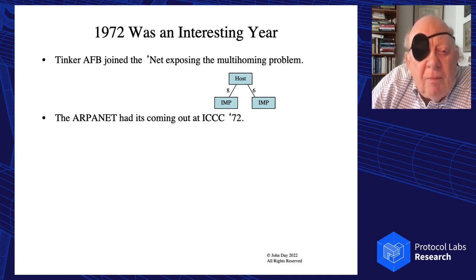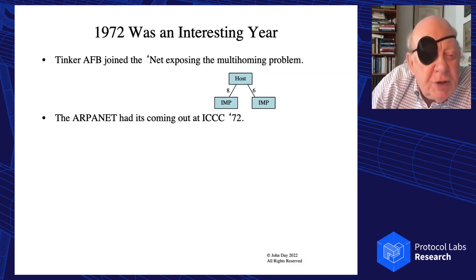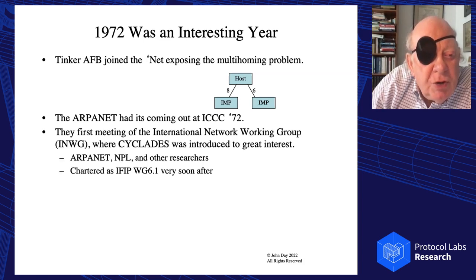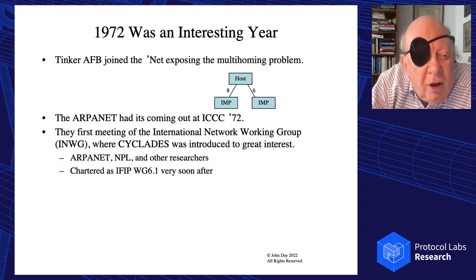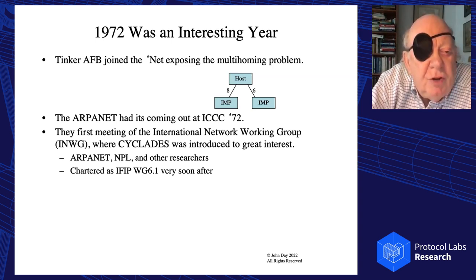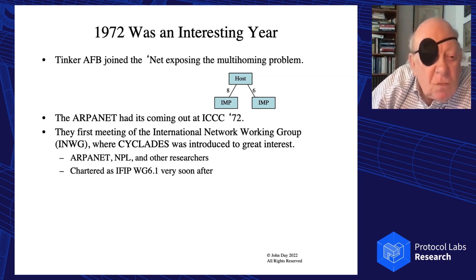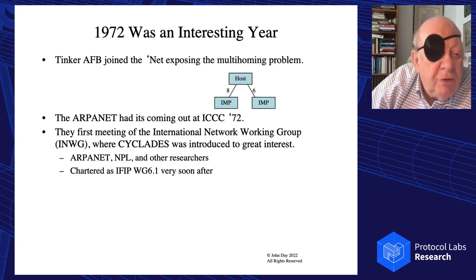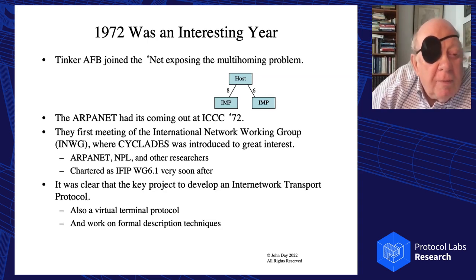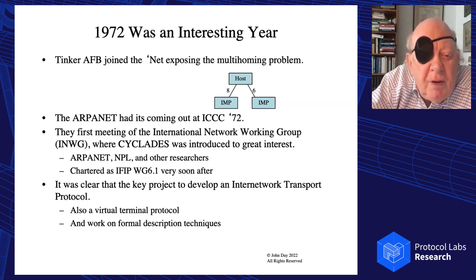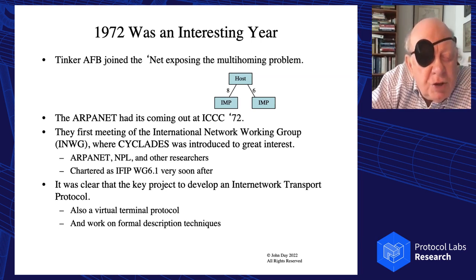The ARPANET had its coming-out party in 1972 at ICCC. The first meeting of INWG occurred at ICCC '72, where Cyclades was introduced and everyone was bowled over by it. ARPANET, NPL, and others were involved in INWG, which was finally chartered as an IFIP working group. It was clear that the key project would be to develop an internet transport protocol, key to this new approach. They also developed a virtual terminal protocol and some formal description techniques.